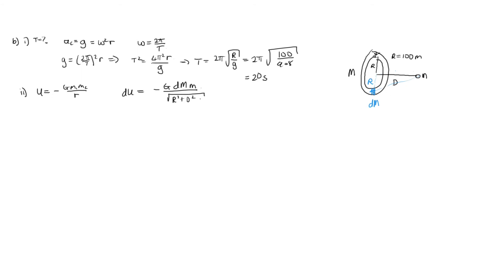But we're not interested in just the contribution from dm — we want to know from the whole ring. What's nice about the ring is that every point around the ring is the same distance from this little mass m, so they all contribute in the same way. We just integrate and sum them all up. So we end up with U equals minus G times m. When we sum all the dm's we get capital M, and this is over the square root of R squared plus d squared.